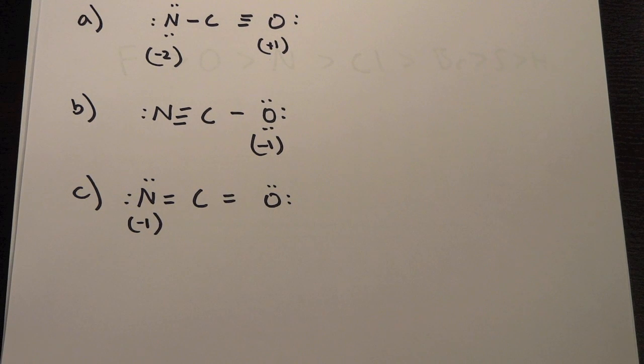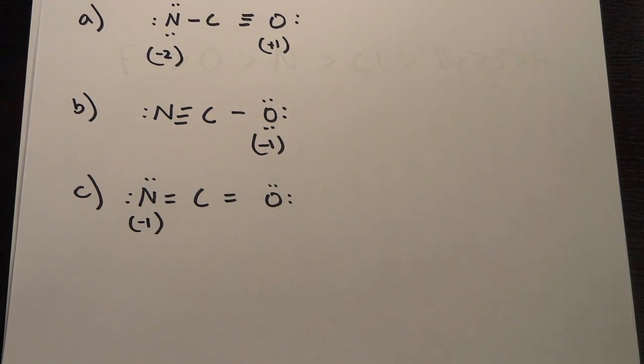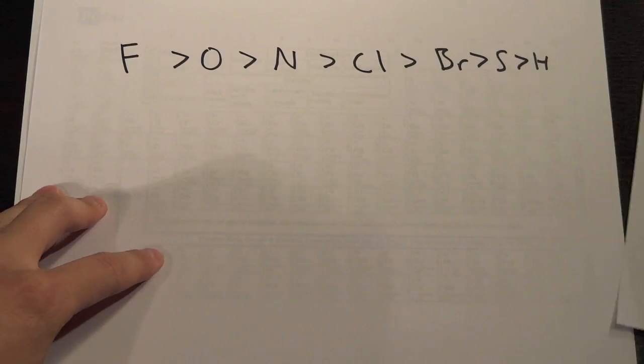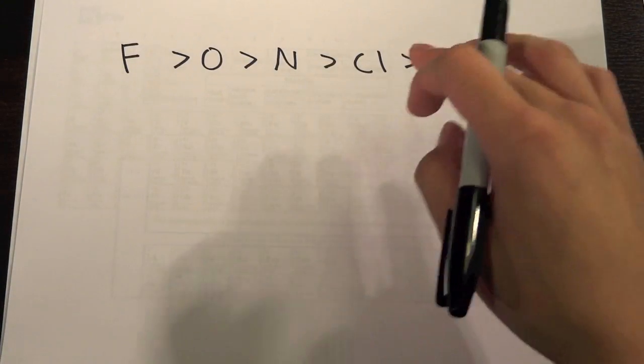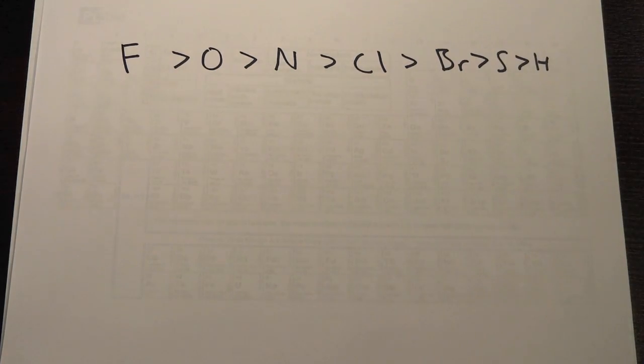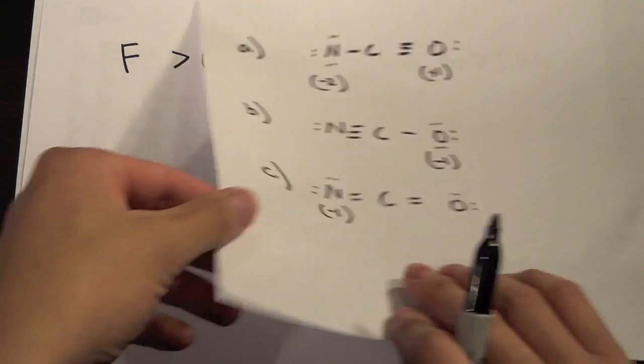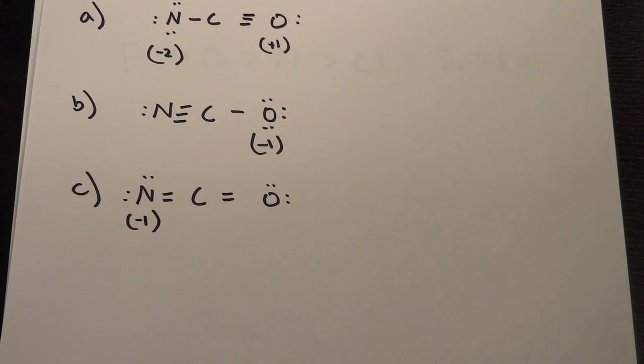So the next thing we want to do is we want to make sure that the formal charge matches the electronegativity. So if we look back we know that the most electronegative follows the FONCL-Br-S, F-O-N-C-L-Br-S-H so out of all the molecules that we have O is the most electronegative because it's FONCL-Br-S.